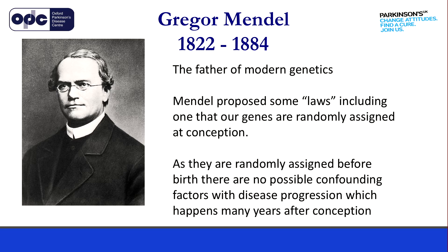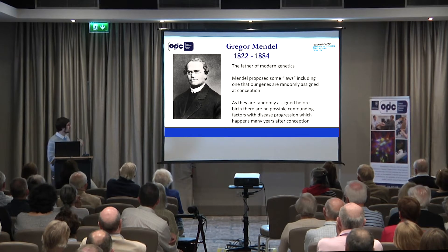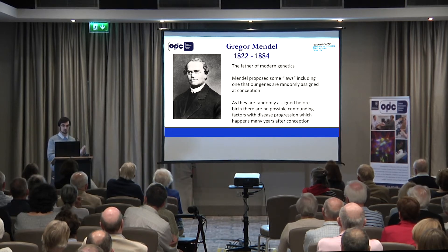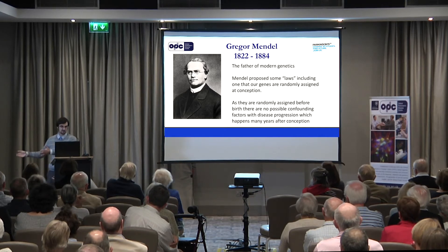One of Mendel's laws says that our genes are basically randomly assigned at the point of conception. And the great thing is, because they're randomly assigned before birth, there are no possible confounding factors with disease progression, because these all happen after conception. And this is the reason why this technique is called Mendelian randomisation.